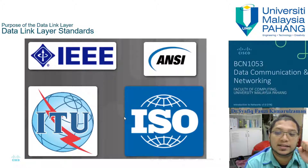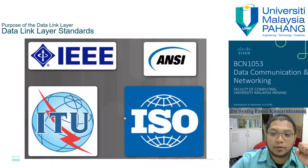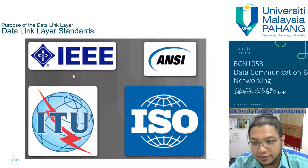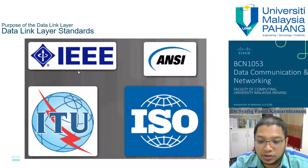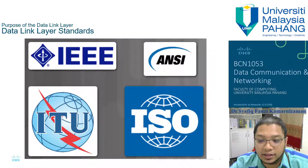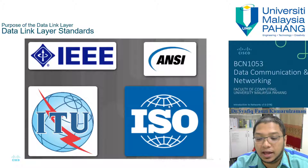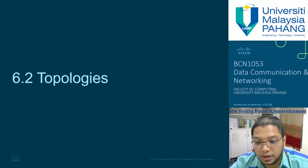The standards within the Data Link Layer are provided by four institutions: IEEE, which is the Institute of Electrical and Electronics Engineers; ITU, which is the International Telecommunication Union; ISO, which is the International Organization for Standardization; and ANSI, which is the American National Standards Institute.